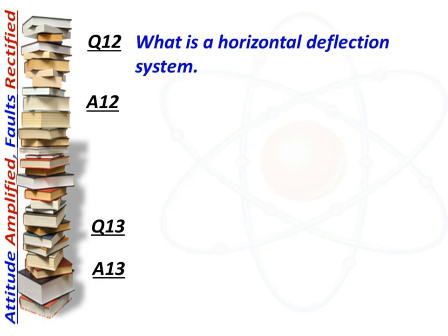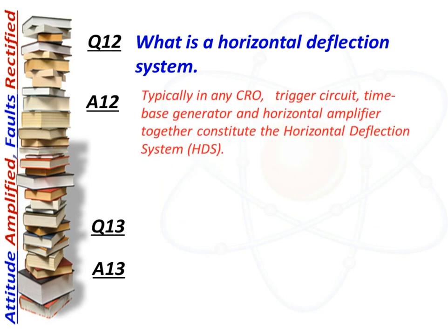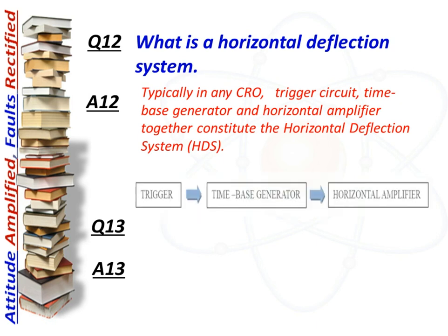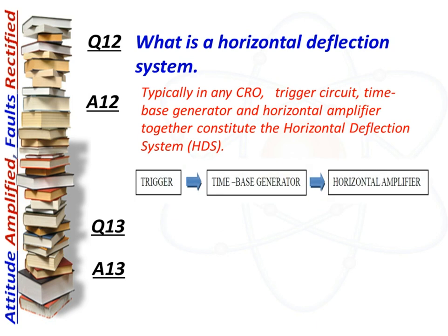Next question: what is a horizontal deflection system? Answer: Typically in any CRO, the trigger circuit, time-based generator, and horizontal amplifier together constitute the horizontal deflection system. The block diagram for the horizontal deflection system consists of: trigger, time-based generator, and horizontal amplifier.